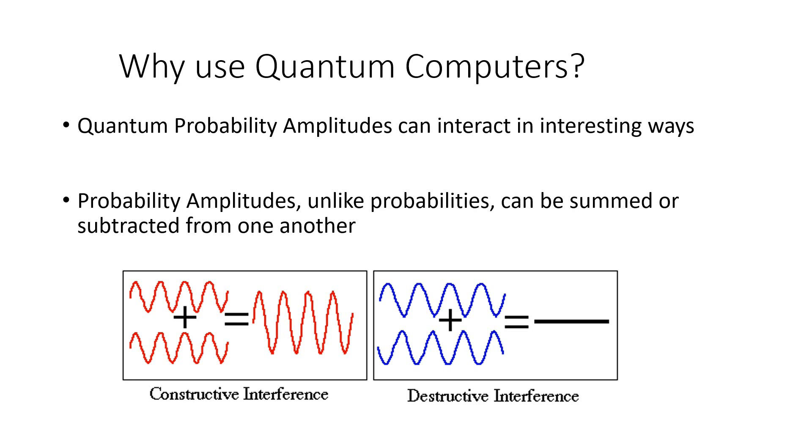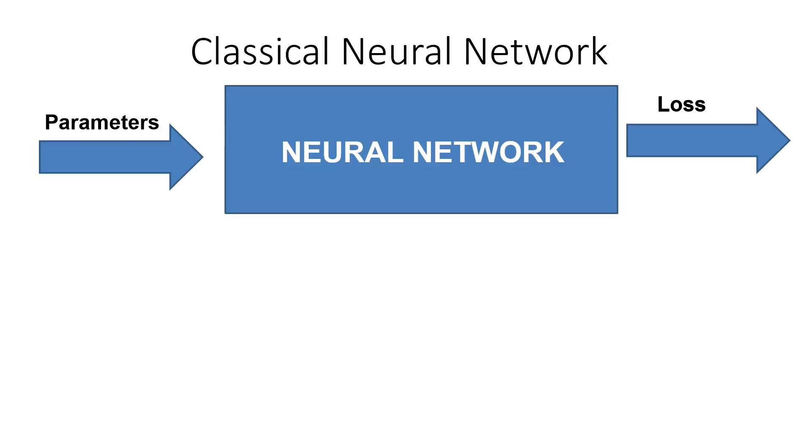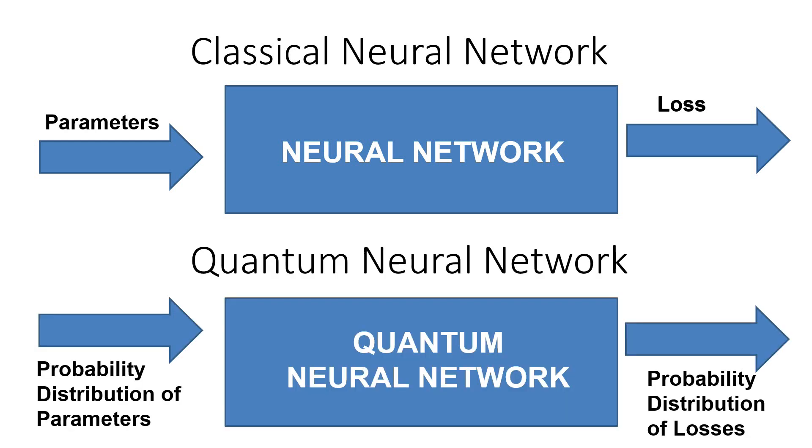A classical neural network will take in parameters and output a loss, but a quantum neural network can take in a probability distribution of parameters and output a probability distribution of losses.